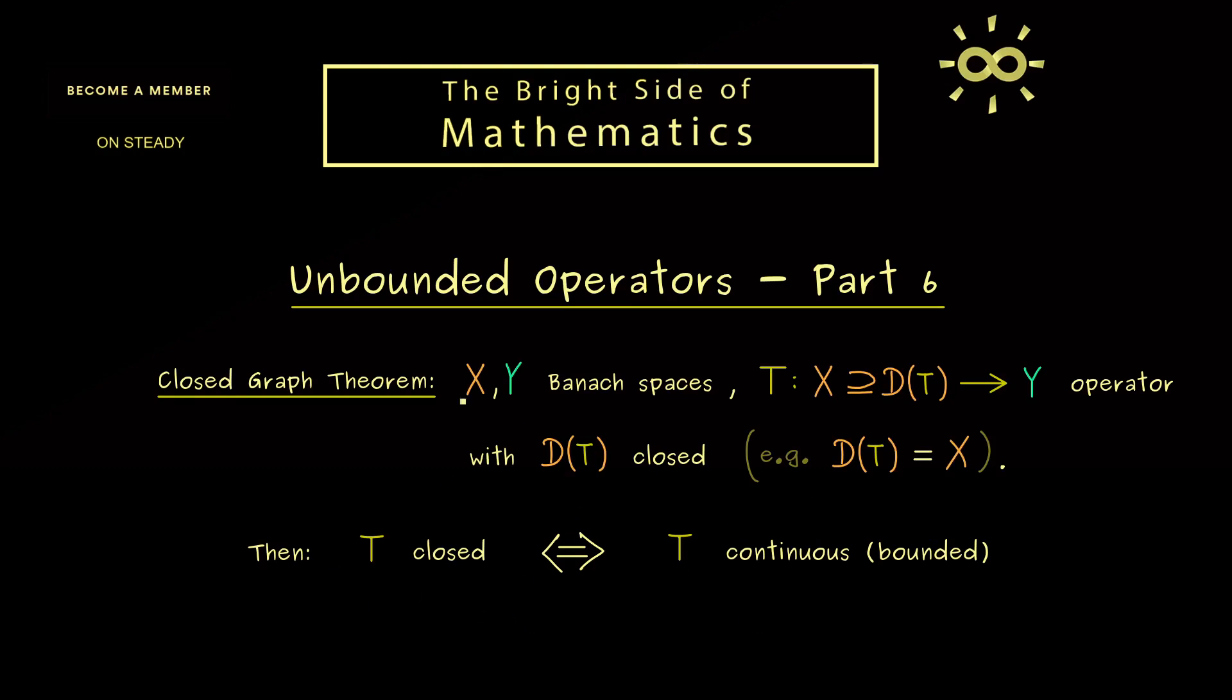So this means in this special case here continuity and closedness describe exactly the same thing. Therefore, it's called the Closed Graph Theorem, because it tells you in this case if the graph of T is closed then we already have a bounded operator.